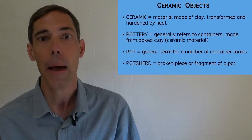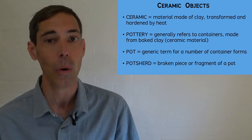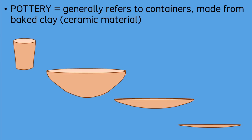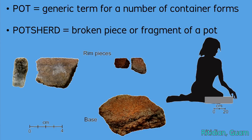This presentation concentrates on pottery, but many other products could be made from baked clay or ceramic material. In the archaeological literature, ceramic objects refer to anything made of clay that was transformed through heat. This material happens to be useful for making containers, known as pottery. The individual pots could be created in diverse forms and styles, and they break into fragments that we identify as potsherds in archaeological sites.